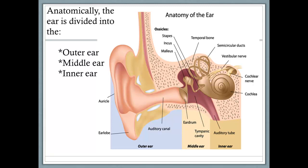Anatomically the ear is divided into three different parts: the outer ear, middle ear, and inner ear. The outer ear consists of the auricle and external auditory canal, and then the tympanic membrane divides the external ear and the middle ear. The middle ear is an air-filled cavity in the temporal bone consisting of the malleus, incus, and stapes — the three small bones known as the ossicles — which transmit sound from the tympanic membrane to the oval window of the inner ear. The inner ear consists of the semicircular canals, which play a major role in balance, and the cochlea, which is for hearing.